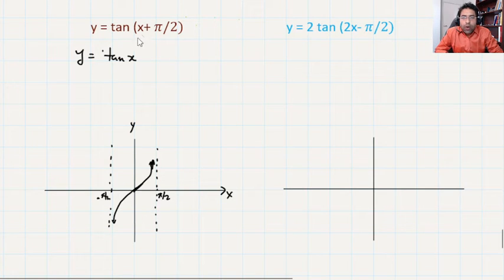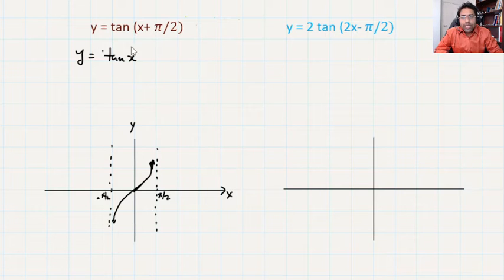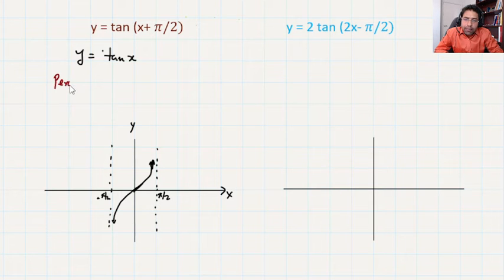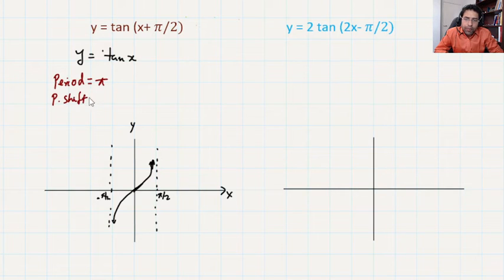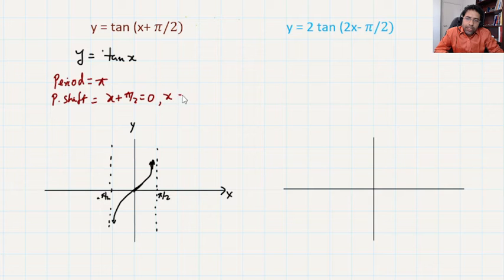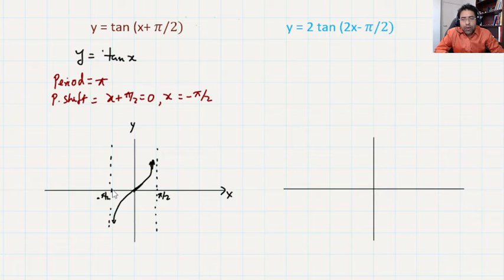We are not talking about amplitude. The period here is the same as the parent graph — the period will be π in both cases. For the phase shift, we set x + π/2 = 0, and solving that gives x = -π/2. So basically our graph is shifting by -π/2.